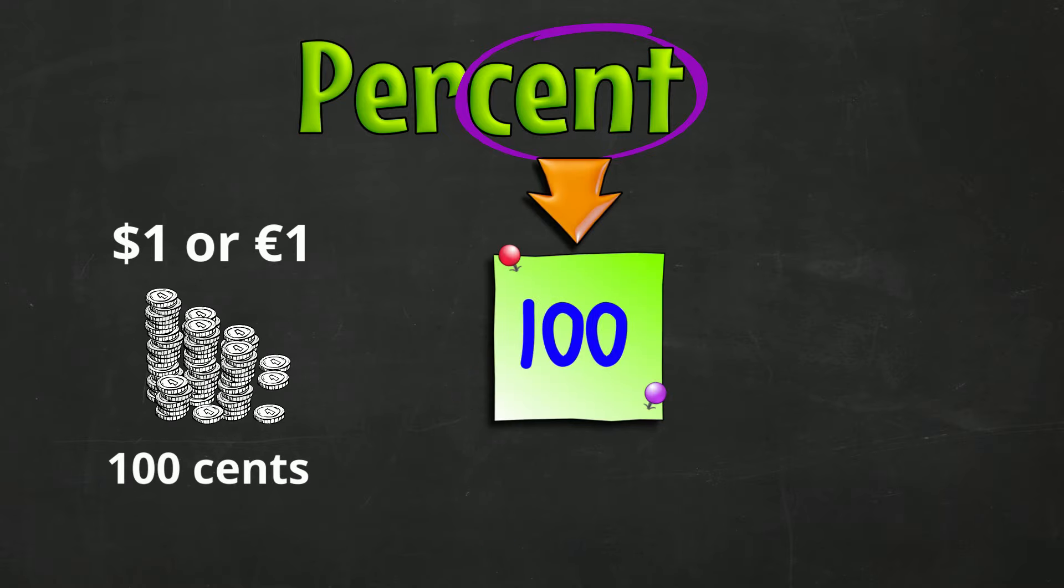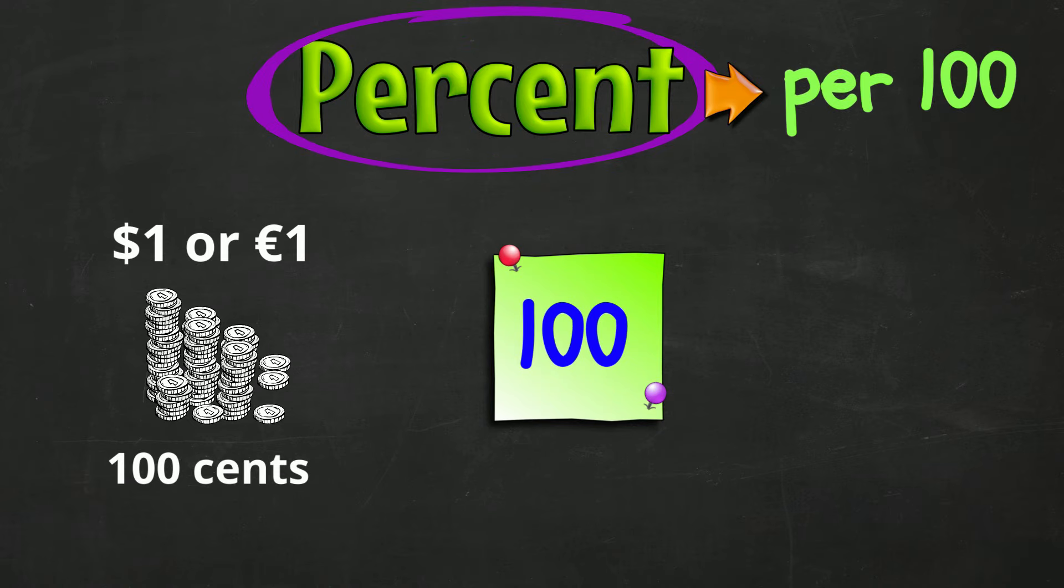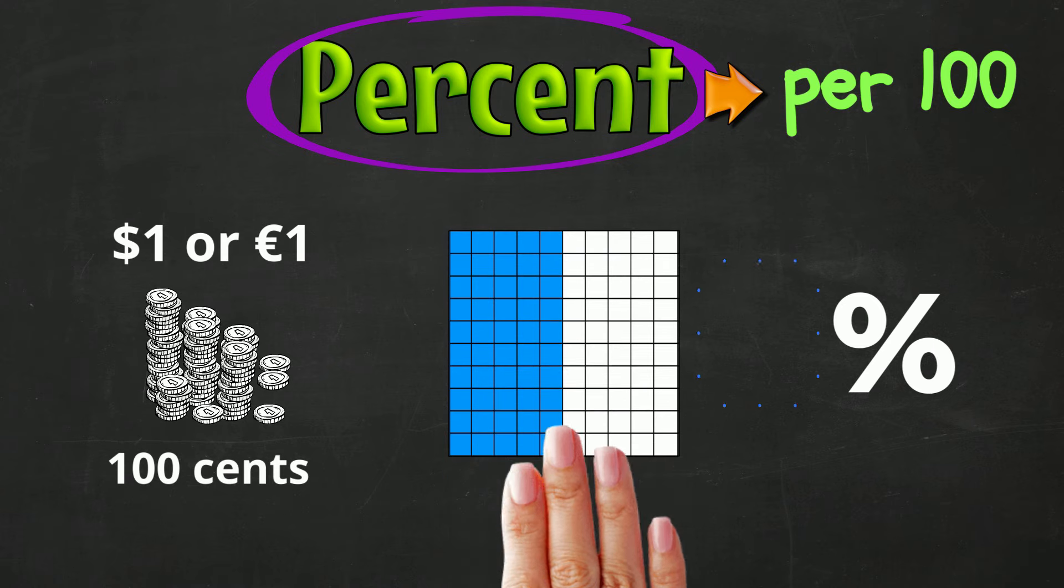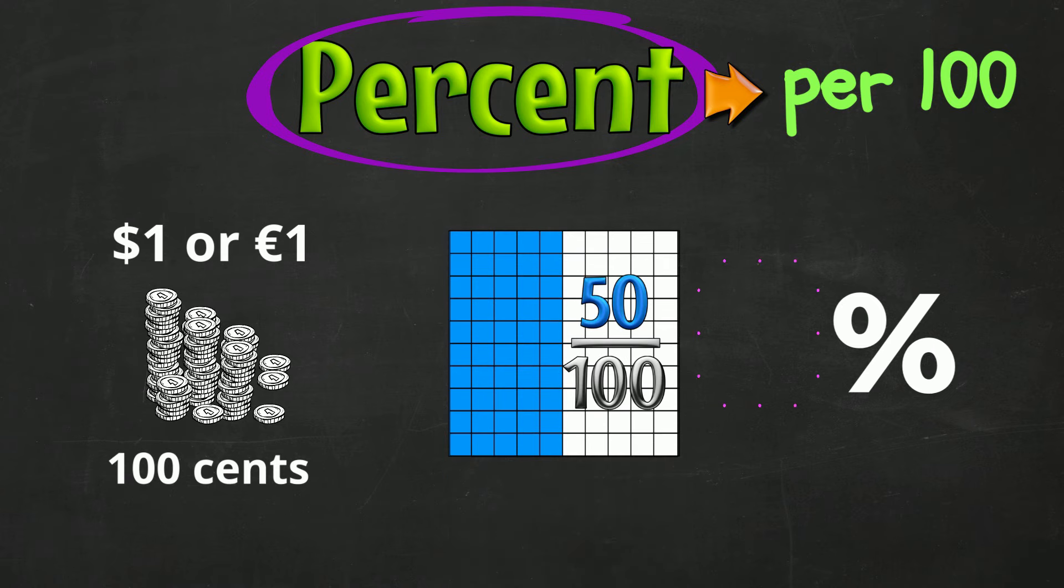Cent means 100, and percent means per 100. This is the percent sign. There's always some number attached to it. Like in our diagram, 50 parts out of 100 are shaded. It's 50% blue!